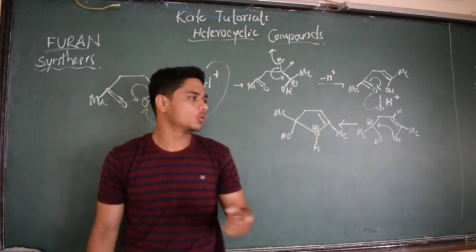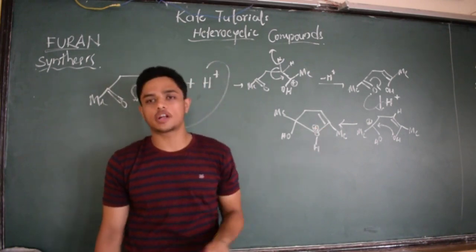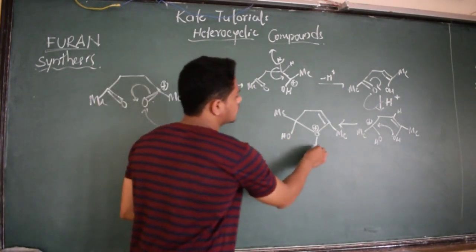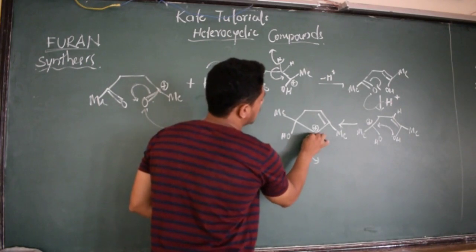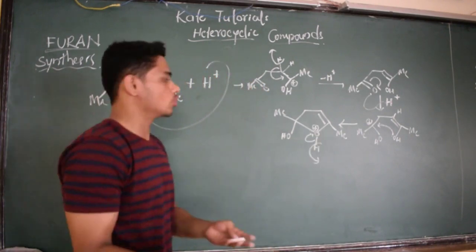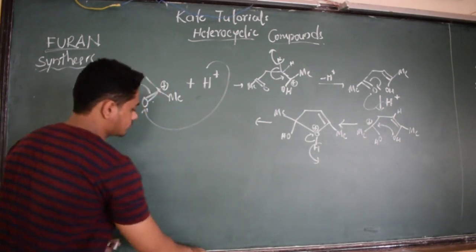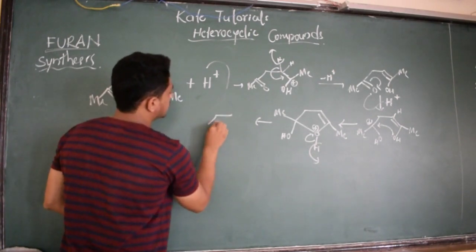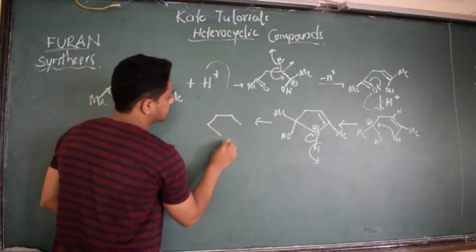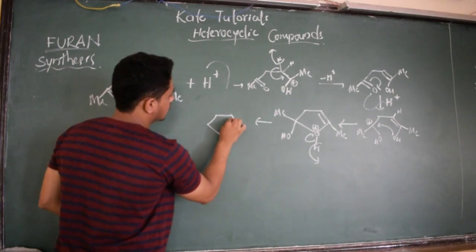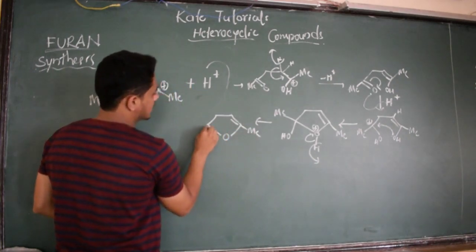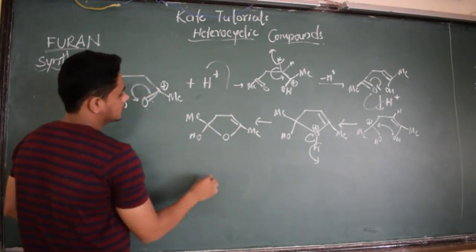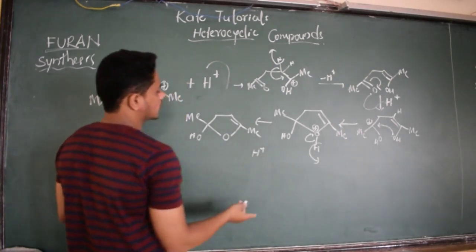The oxygen, which is very electronegative, cannot remain electron deficient. Because it is more electronegative, it forces the electron: it loses this hydrogen and takes this electron pair to become neutral. The next compound has a double bond, methyl group here, oxygen OH, and ME. The H left as H+.